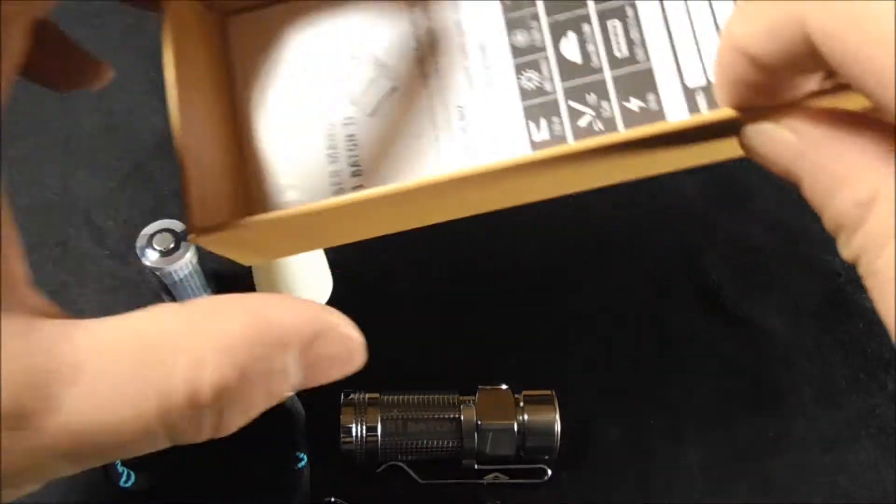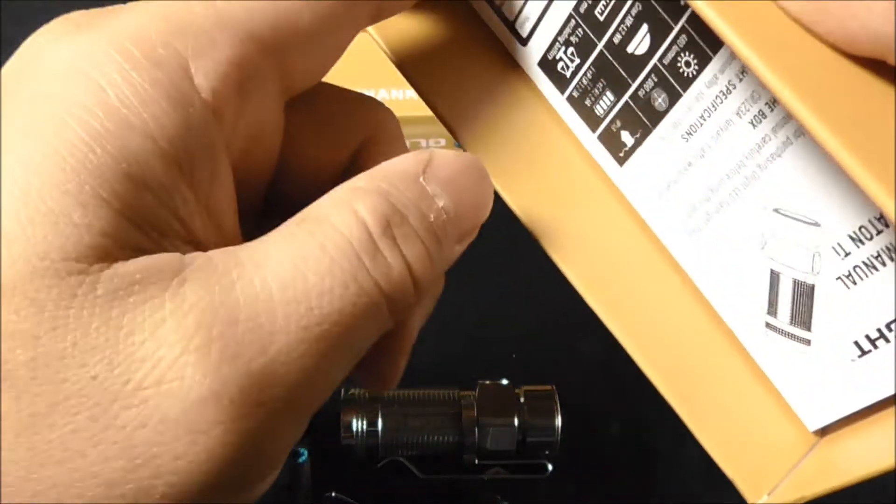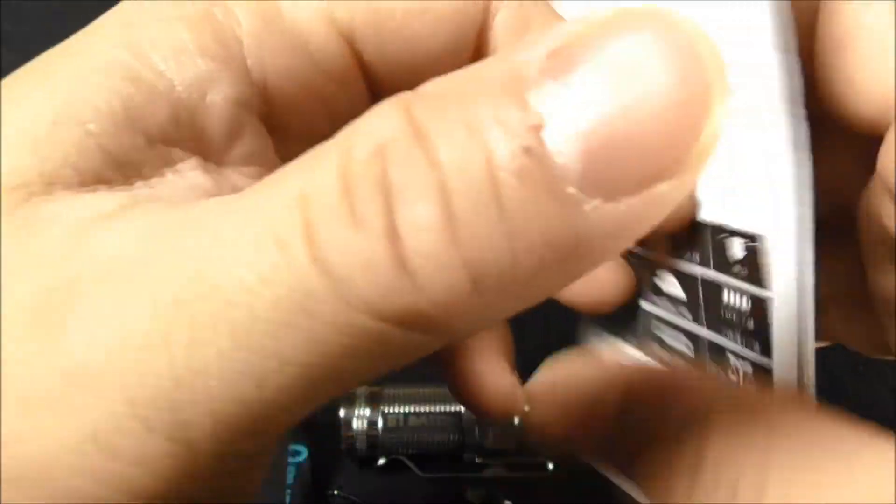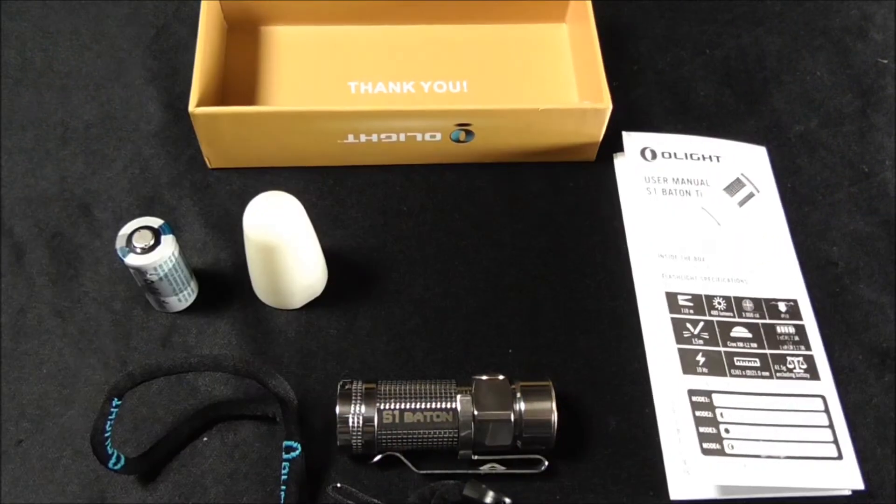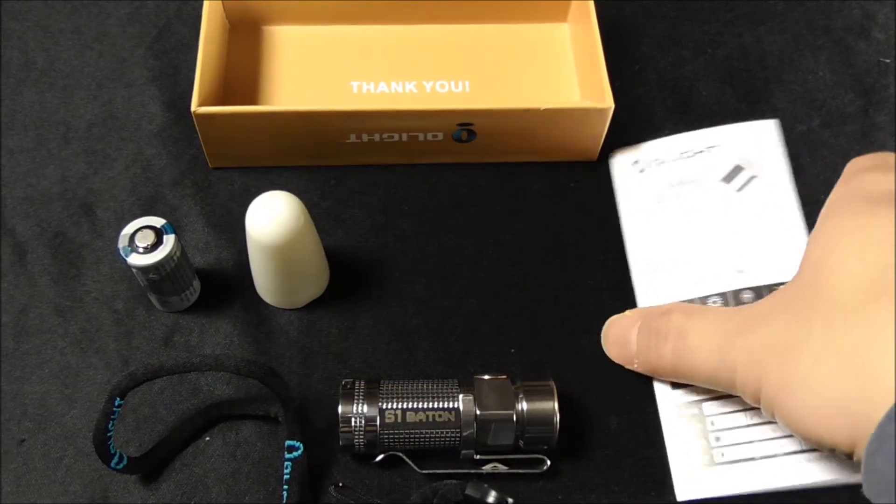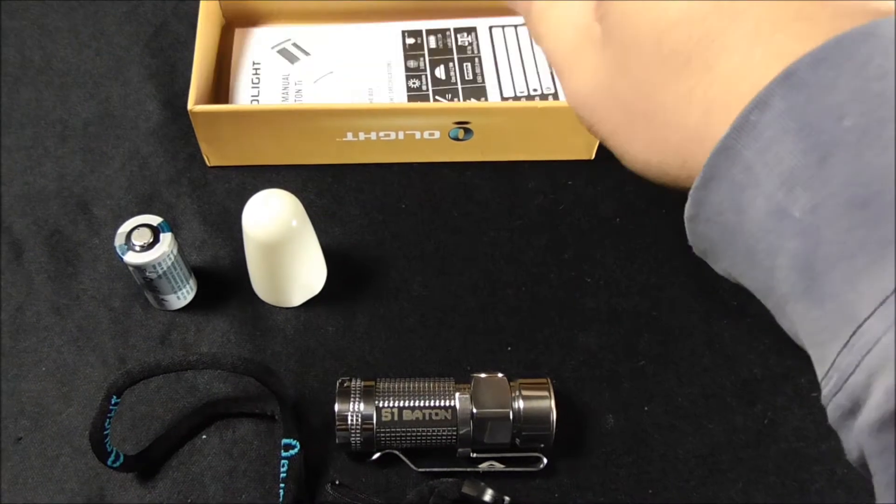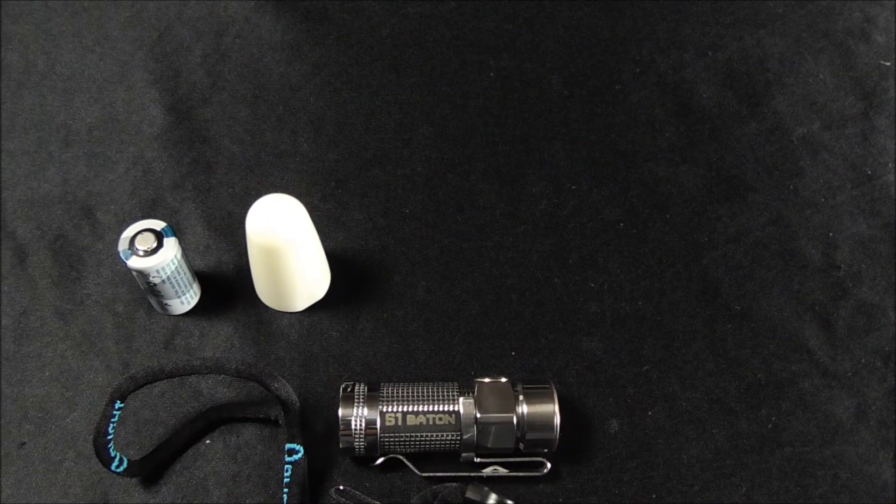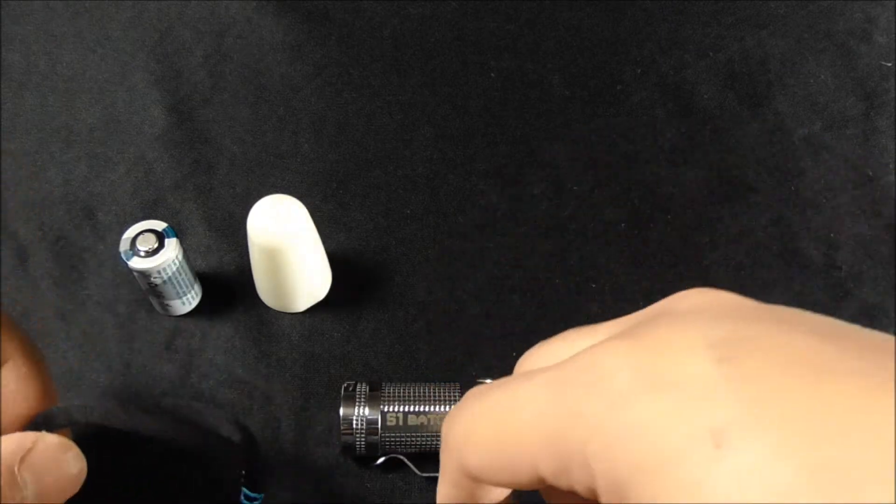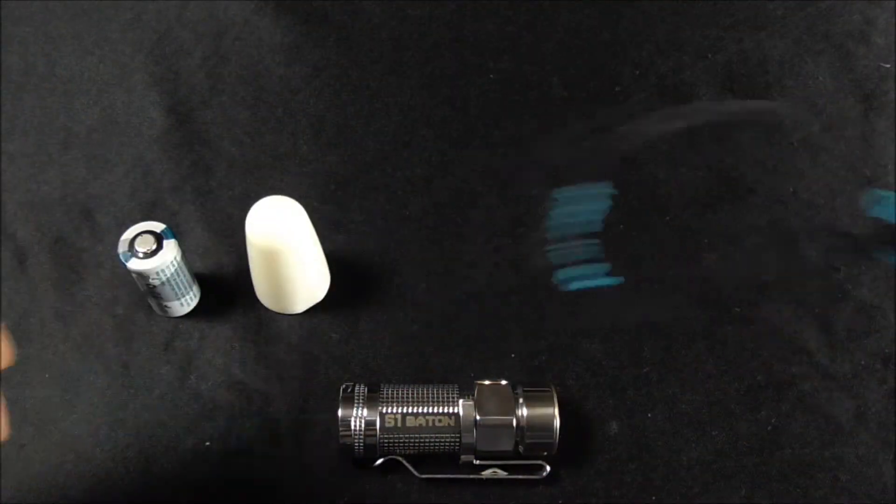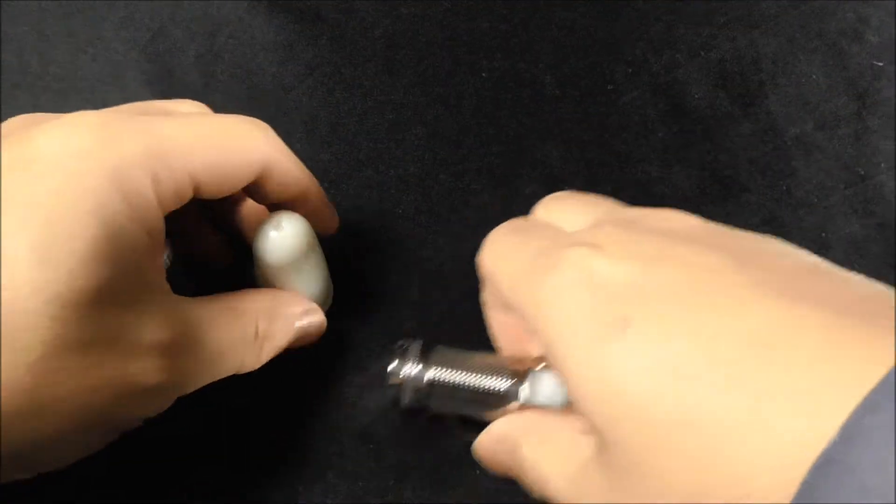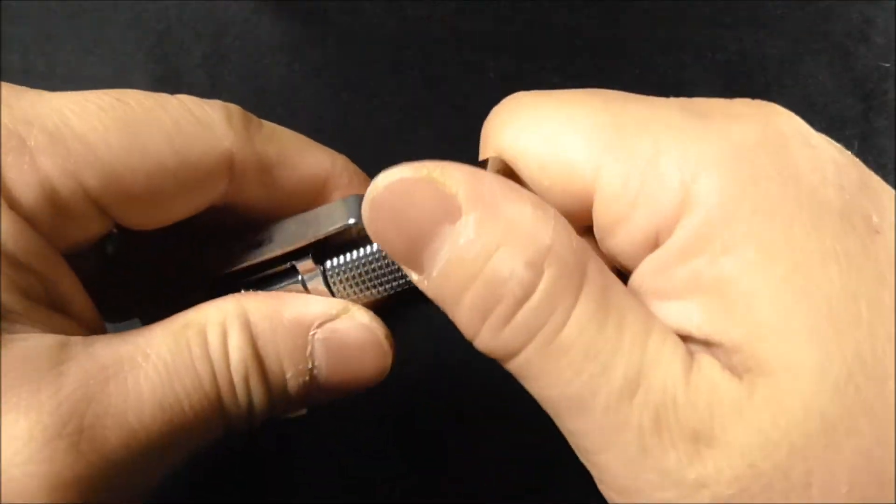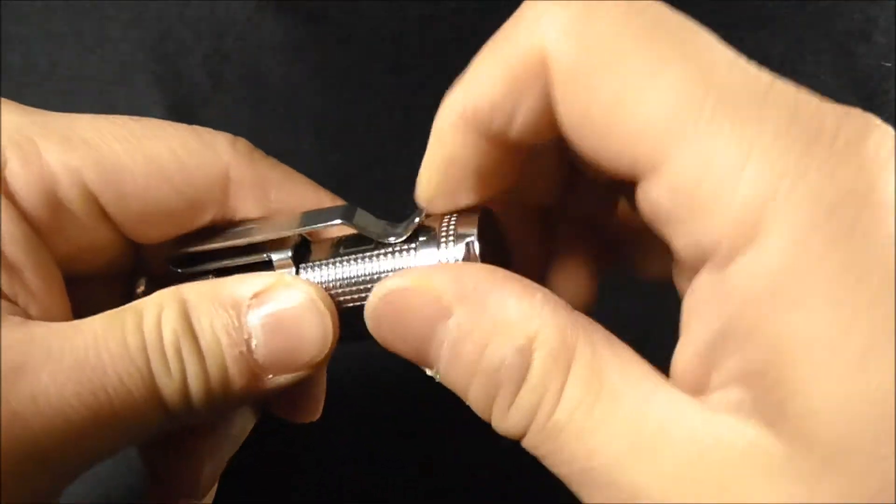In the user manual, it tells you the key features such as the 3 modes: 7 lumens, 75 lumens, and 480 lumens which is the highest, as well as 2 special modes, the Moonlight mode and the strobe mode. The Moonlight mode is 0.5 lumen and the strobe mode is 10 Hz.